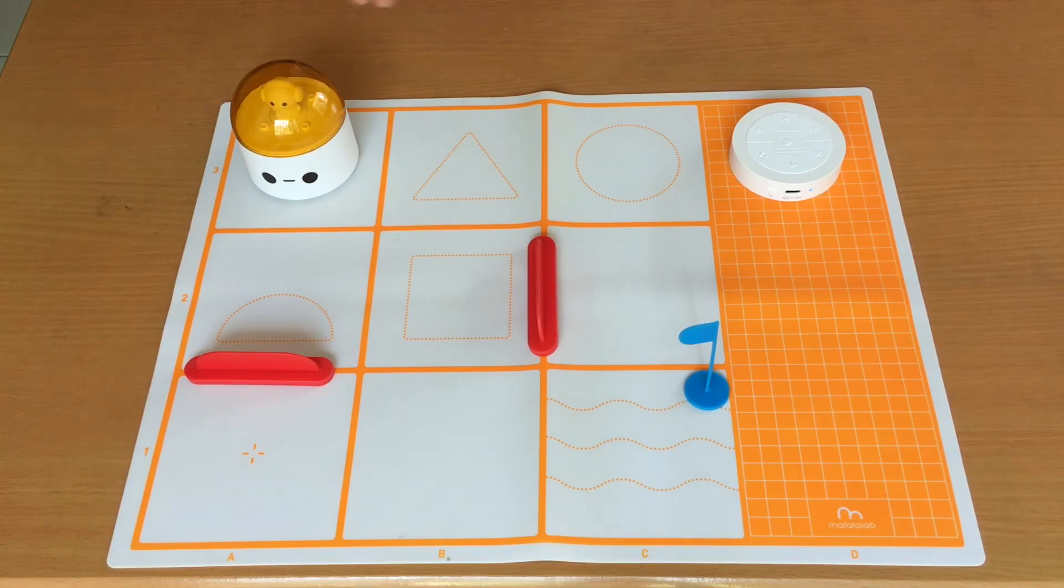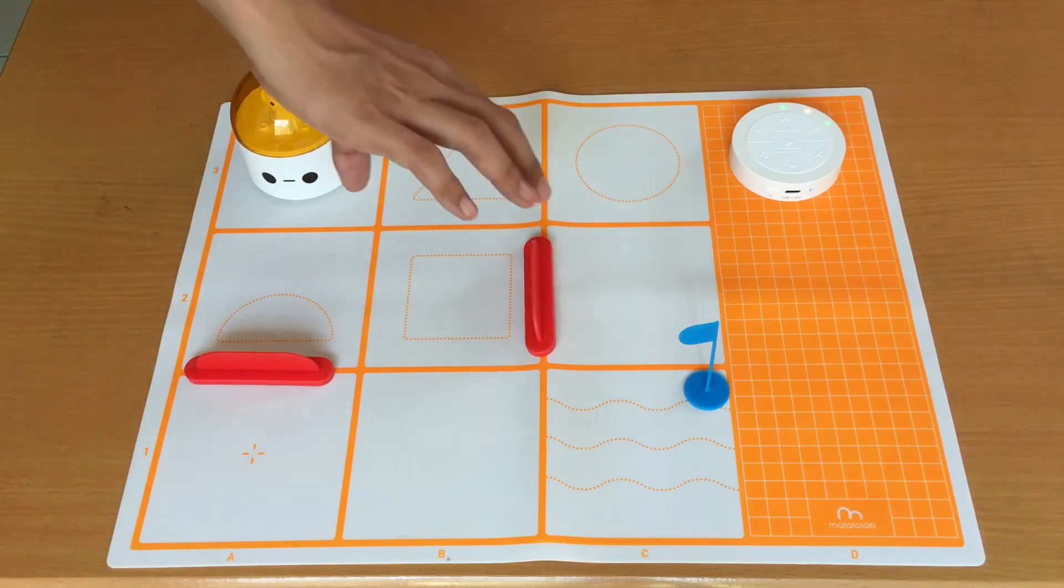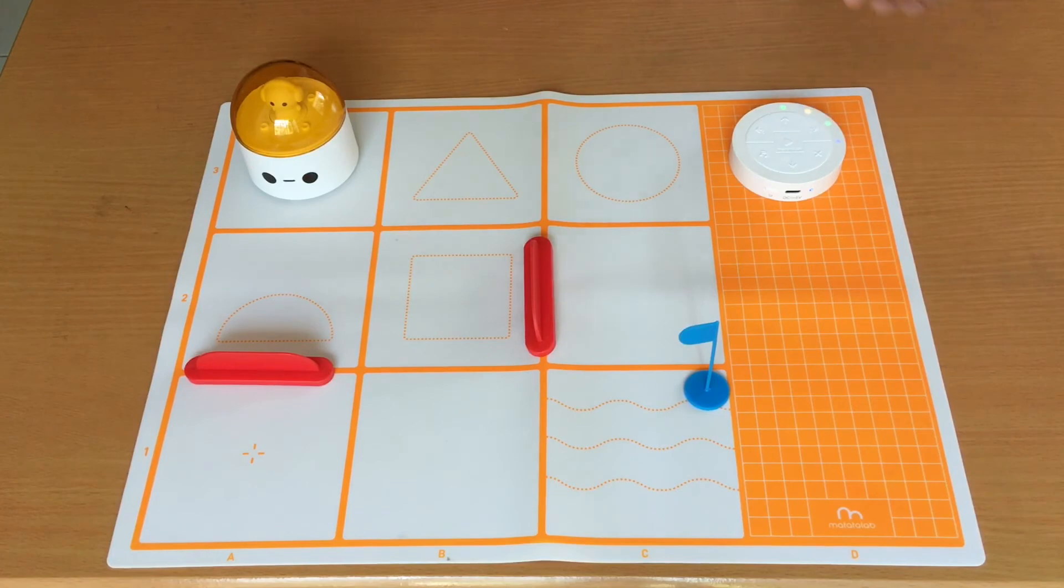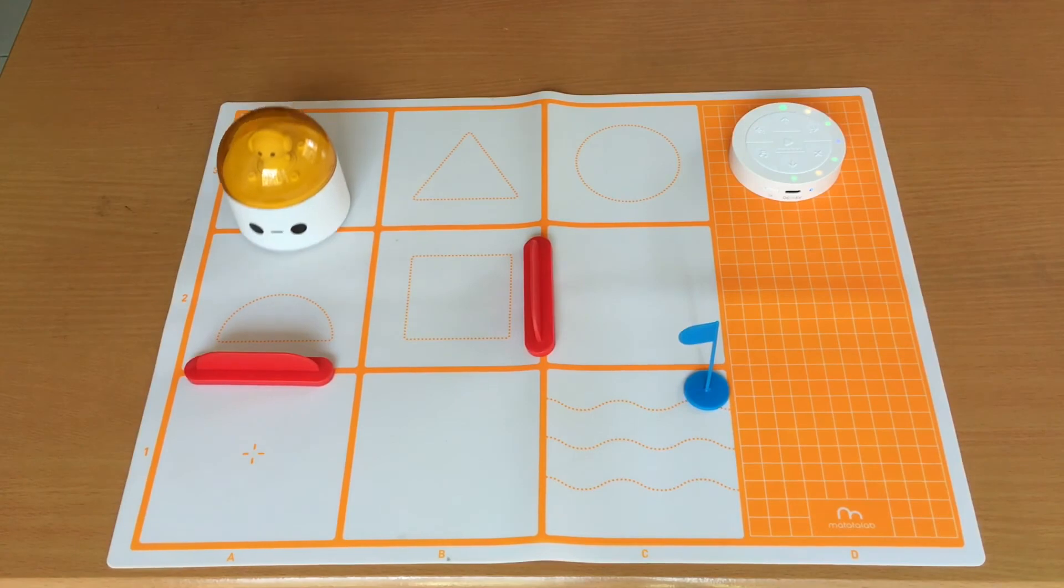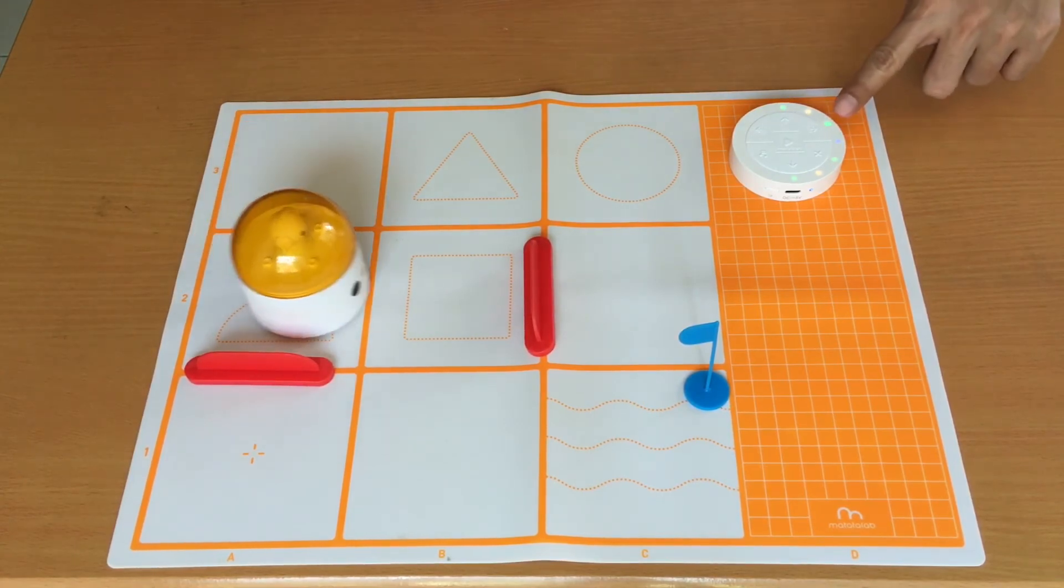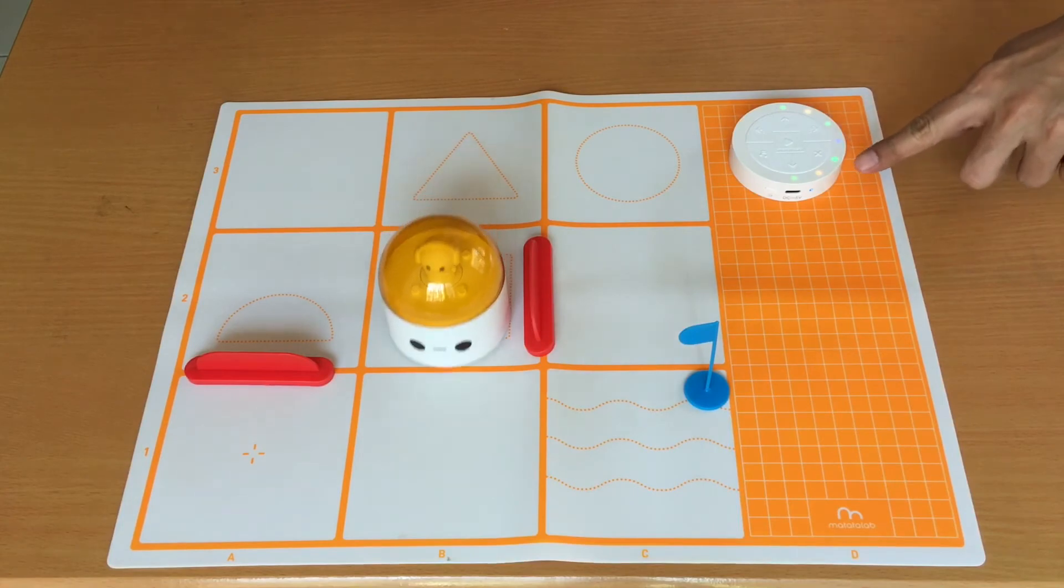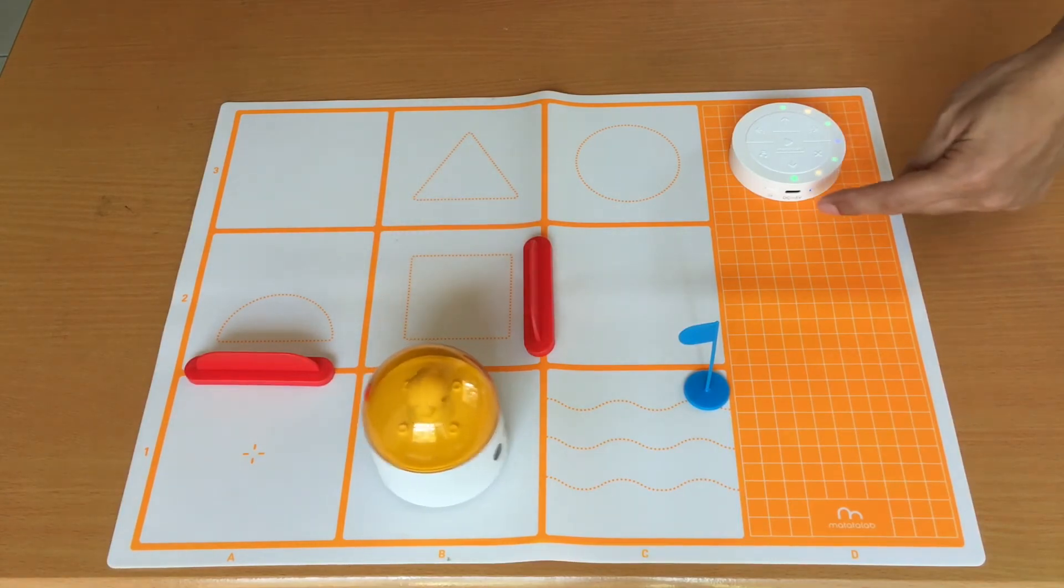So first the action is forward. So press the forward button. And then turn to the left. Left turn. And move forward again. And then turn to the right. And move forward again. Now turn to the left. And move forward again. Now let's see if I did it right. Press the play button. Yay!